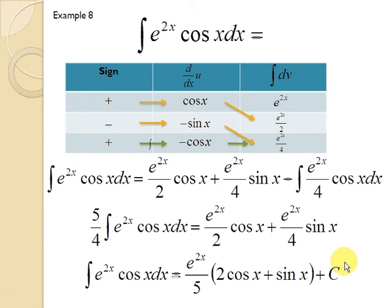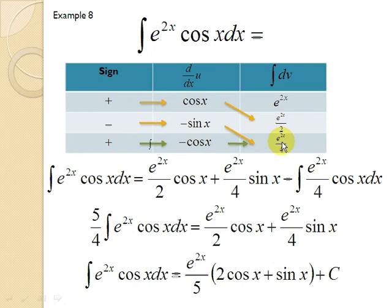Now let's look at Example 8, which is similar to Example 7. We have a trigonometric function and an exponential function, so u will be the trigonometric function. Differentiating cos(x) gives negative sin(x), and differentiating again gives negative cos(x). For e^(2x), integrating gives e^(2x)/2, and integrating again gives e^(2x)/4.